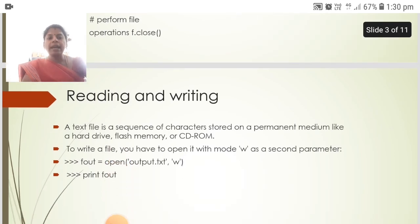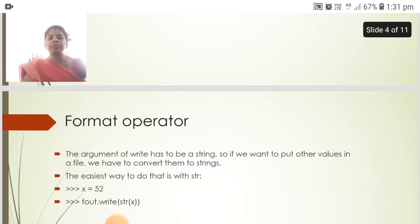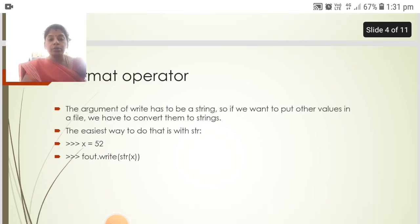A text file is a sequence of characters stored on a permanent medium like a hard drive, flash memory, or CD-ROM. To write a file, you have to open it with the mode 'w' as the second parameter — for example: f_out = open('output.txt', 'w'), which opens the file in writing mode. The argument of the write function has to be a string, so if we want to put other values in a file, we have to convert them to strings. The easiest way to do that is with str().